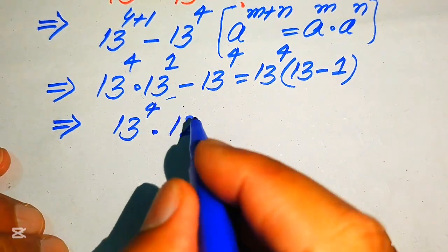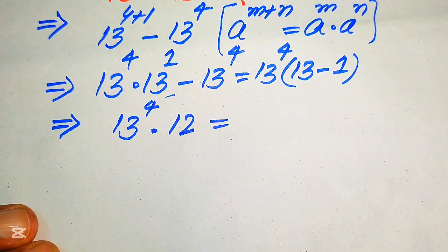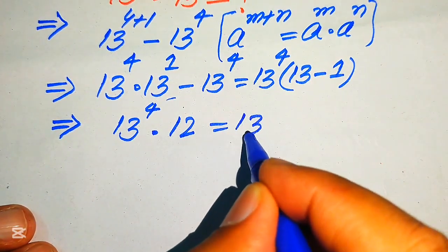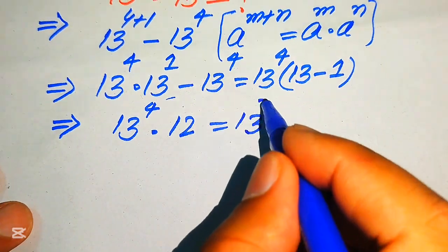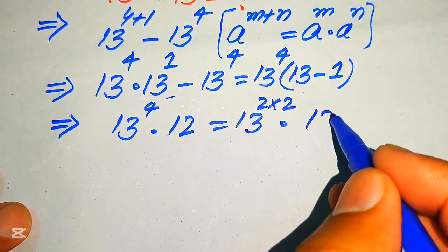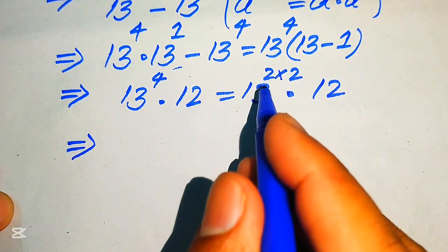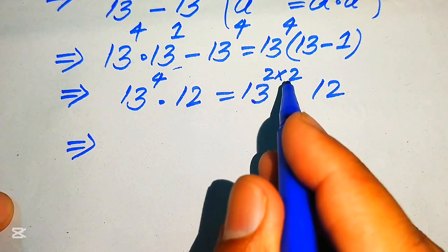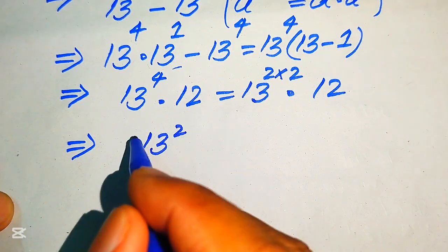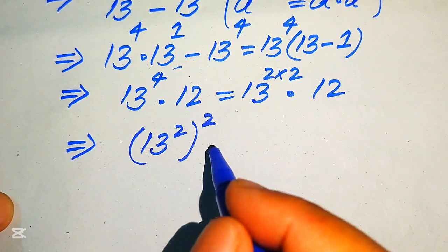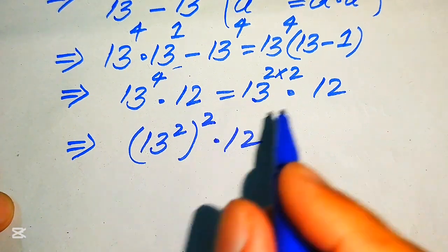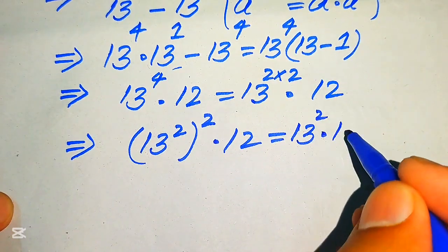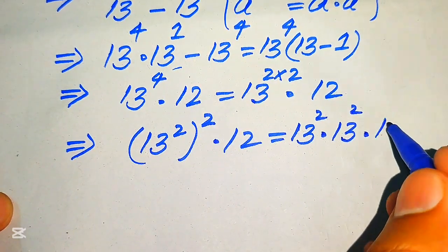Now we need to find the value of 13 to the power of 4. We write 13⁴ by breaking the exponent 4 as 2 multiplied by 2, giving us (13²)², multiplied by 12. Applying the exponent law, (13²)² is written as 13² × 13², so the expression becomes 13² × 13² × 12.